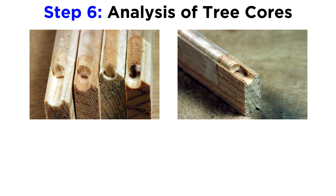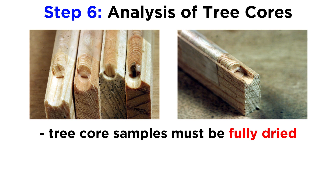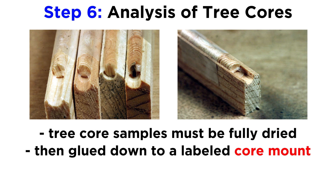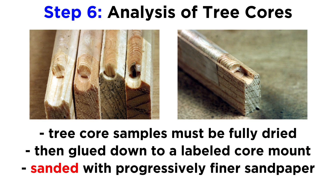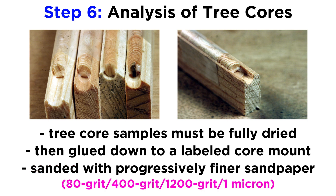After the cores are brought in from the field, the next step is to prepare them for further analysis. First, the cores must be fully dried, after which they are properly oriented and glued down to a labeled core mount. Then they are carefully sanded with progressively finer grades of sandpaper — from 80 grit to 400 grit, and even down to 1200 grit or 1 micron paper — to reveal their rings.